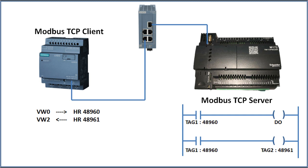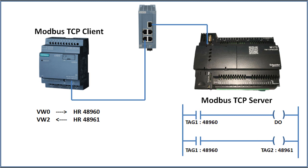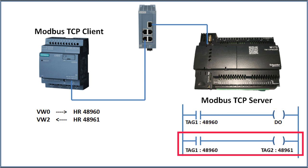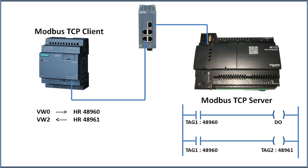I have set up a Schneider M172 PLC as a Modbus server and configured two holding registers at addresses 48960 and 48961. At address 48960, I have configured a digital output of the M172 PLC, and at address 48961, we will read the feedback of that digital output. I will trigger one address from Logo PLC to turn the DO on and off, and I will demonstrate two different methods of configuration in this video.